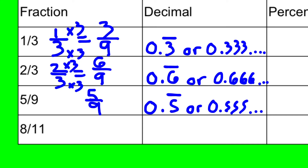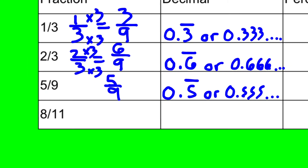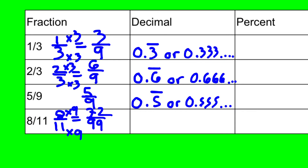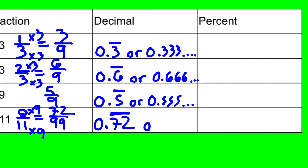These are all ones we've looked at before. We also looked at situations where we have fractions out of eleven, and we saw that those can be made out of 99. You can do that by multiplying by nine and by nine, and we get 72 out of 99. The pattern of nines tells us there'll be two digits repeating — the numerator 72 will be the two digits that repeat, giving 0.7272...